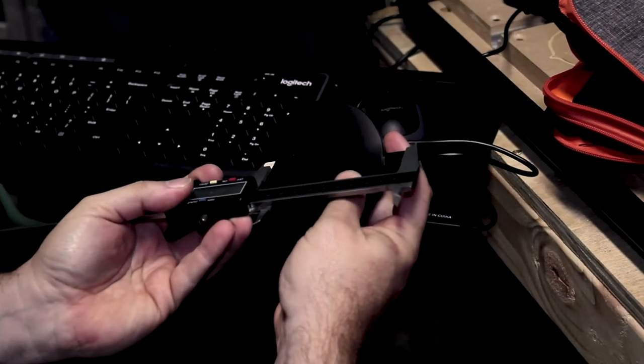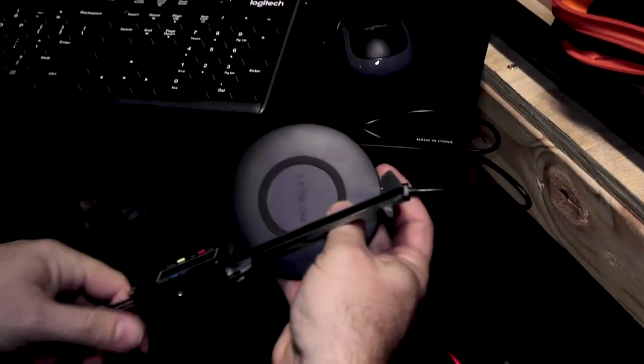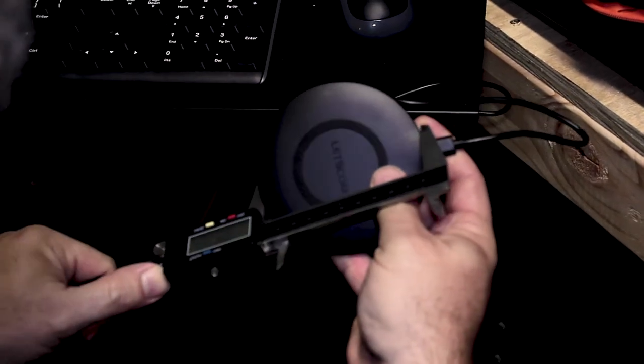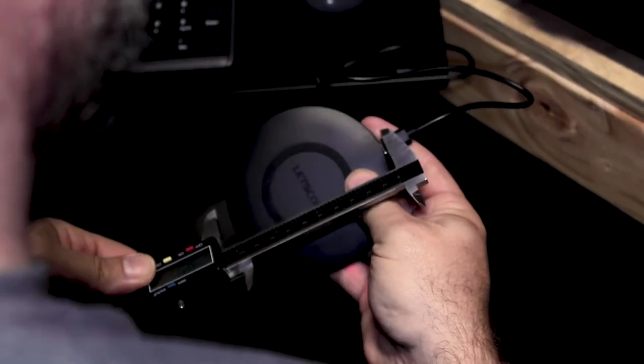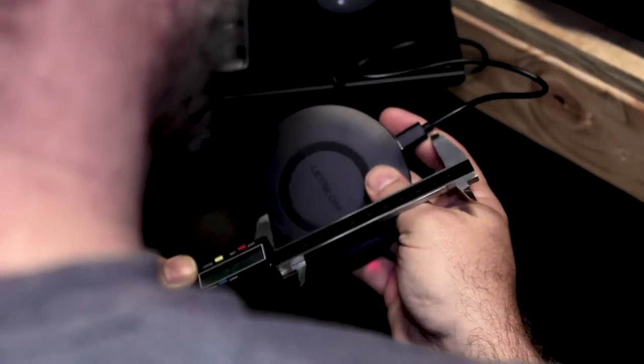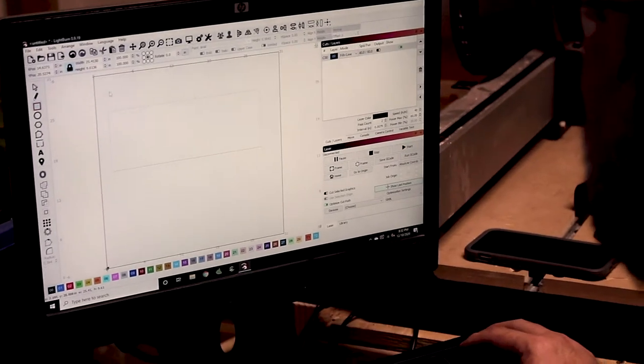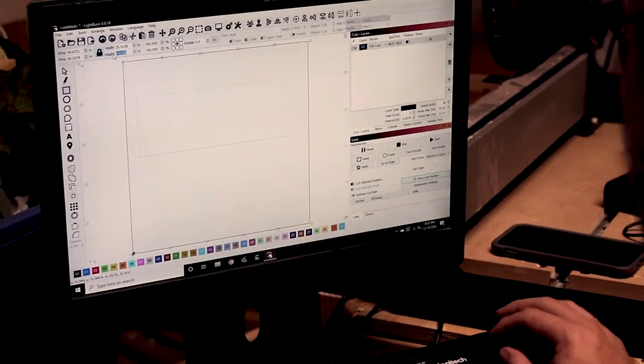Like most projects, this one starts out with taking measurements. I'm cutting out a wooden insert to set the wireless charger into. So I took measurements for both the wireless charger and the pocket on the wire organizer that it's going into.